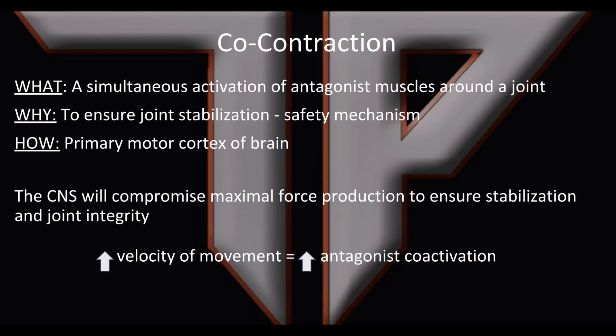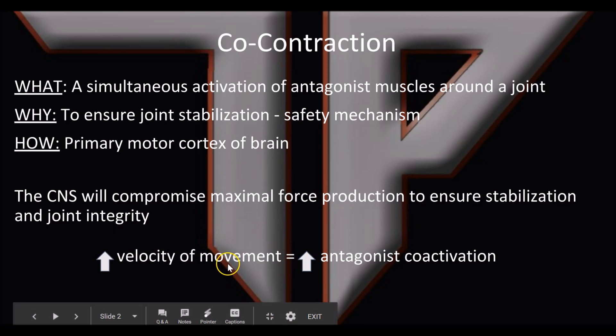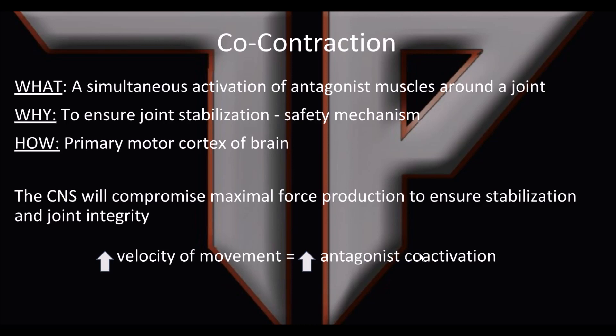What this means is that any of these issues will reduce force production, and joint stability can actually decrease too when you have a bad co-contraction. We know that if you don't have stability, you can't achieve maximal force. So again, increased velocity of movement leads to increased antagonistic co-activation.